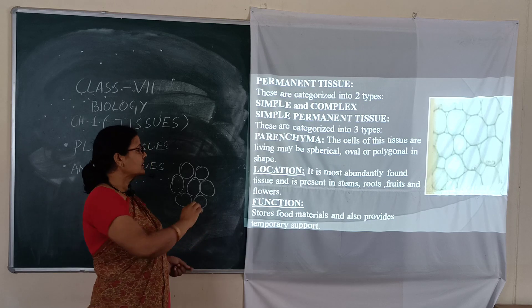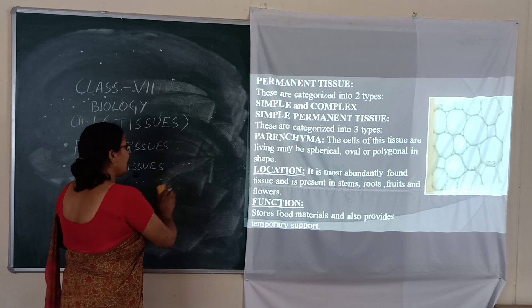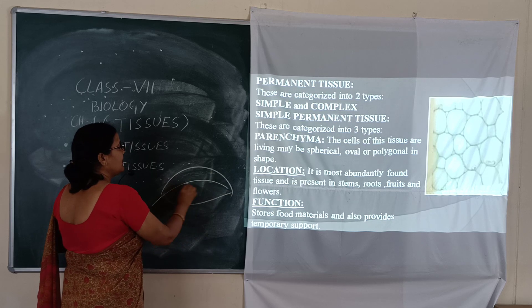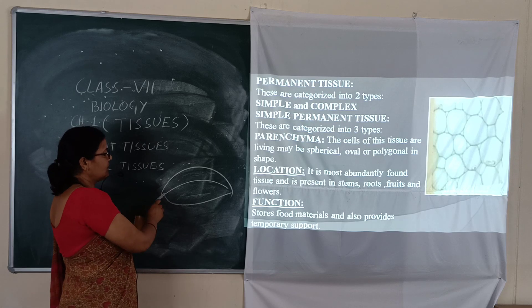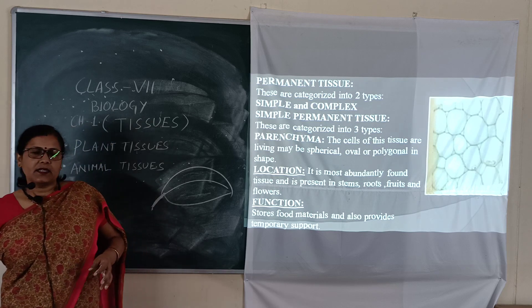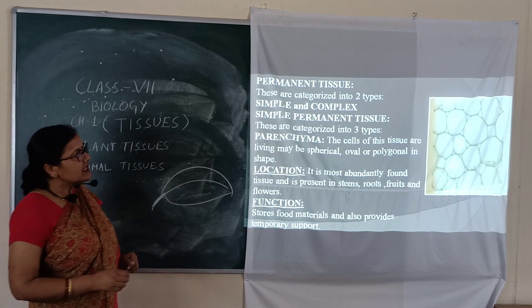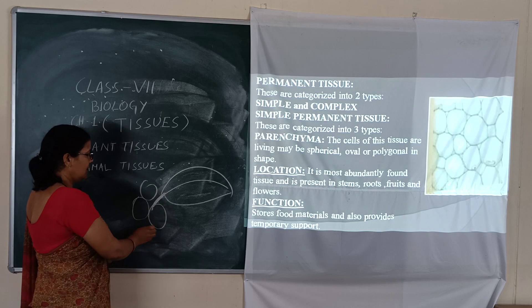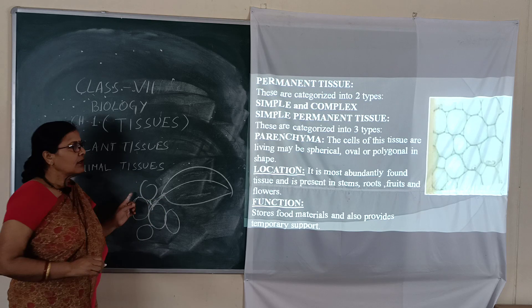Parenchyma is present at the surface of the leaf. In the diagram, you can see parenchyma tissue has intercellular spaces that are free — no intercellular fluids are present. Parenchyma is also involved in storing food.